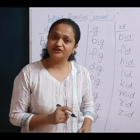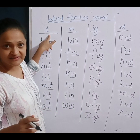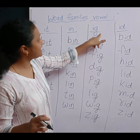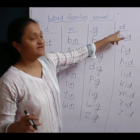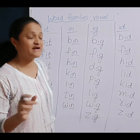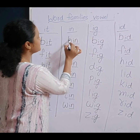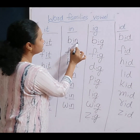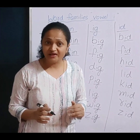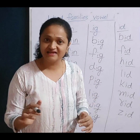So children, what you have learnt in today's lesson? It, In, Ig, Id. So you have started blending three-letter words. How many letters are there? One, two, three — three-letter words.